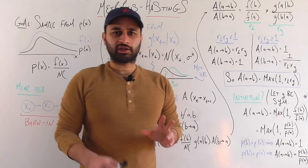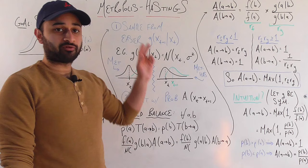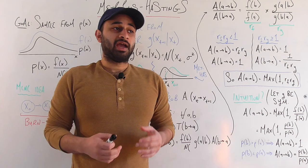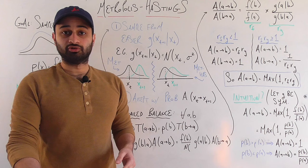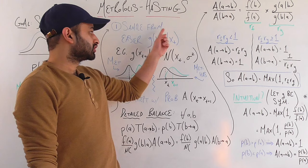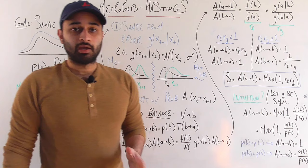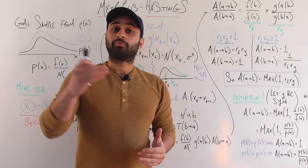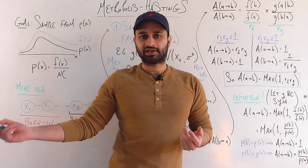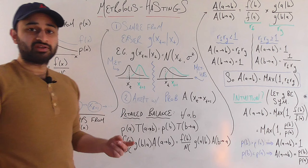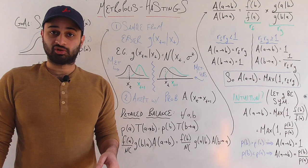More generally, we choose some easier distribution g to sample from — typically the normal distribution, but it can be any distribution that is easy to sample from and has the same domain as the target. We want to sample the next candidate x_{t+1} from g, but dependent on the previous sample x_t. For us, g is the normal distribution centered at the previous sample x_t with some fixed variance σ². In short: look at x_t, center a normal there, and sample the next candidate x_{t+1} from that normal.